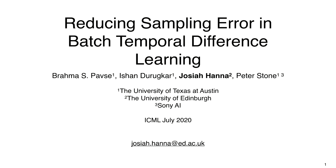Let's start with the first paper called Reducing Sampling Error in Batch Temporal Difference Learning. This is a joint work between Brahma Pauze, Ishan Durukar, Josiah Hanna, and Peter Stone. We have Josiah here to give the talk. Josiah is currently a research associate working with Stefano Albrecht at Edinburgh. Josiah has finished his PhD in reinforcement learning at the University of Texas in Austin where he worked with Peter Stone. Let's welcome Josiah.